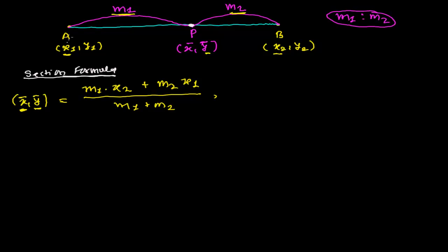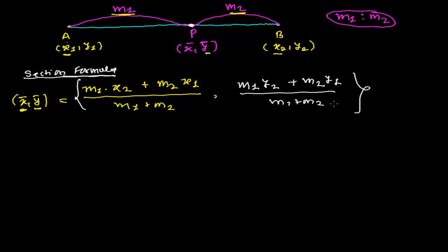For the y-coordinate ȳ, it's the same idea — x2 and x1 are simply replaced by y2 and y1: ȳ = (m1·y2 + m2·y1) / (m1 + m2). A simple way to remember this is the pattern '1-2, 2-1': if you choose m1 in the ratio, you pair it with coordinate 2; if you choose m2, you pair it with coordinate 1. In the denominator you add both — 1-2, 2-1.